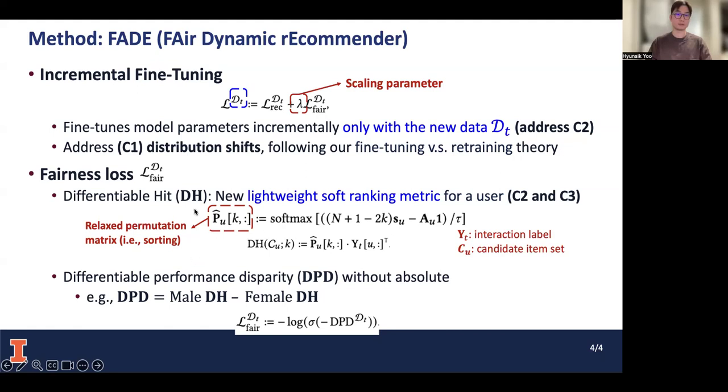Based on this DH, we can define the differentiable performance disparity (DPD) between two user groups. Based on this DPD, we define the fairness loss, which we minimize in the final loss along with the standard recommendation loss.